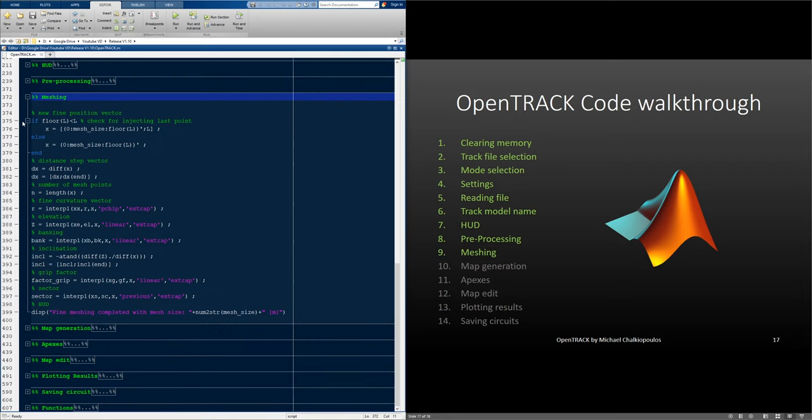Now, we move on to the meshing commands. Here, we see the new position vector that utilizes the mesh size. We also see the new distance step vector. Here, we save the total number of nodes, and after we start the interpolation of all the variables to actually create the new mesh.